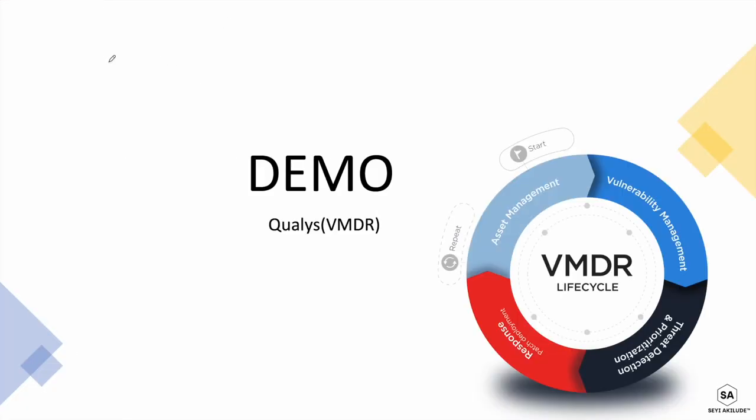Hi everyone, welcome to this course on vulnerability management. In this video, I'll be demonstrating how we can use Qualys to achieve the six processes involved in vulnerability management. In my previous video, I spoke about those six processes and I'm going to reiterate them again. In case you haven't watched those videos, feel free to go back into my playlist on this course and view all of the objectives I've covered. So what are the six processes that I intend to use Qualys to implement?